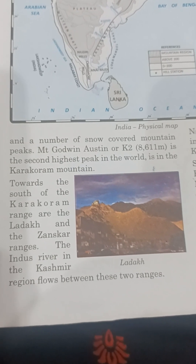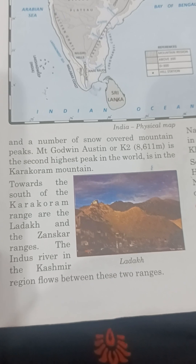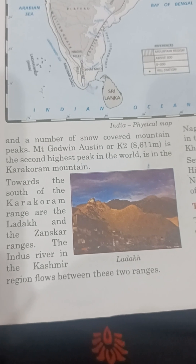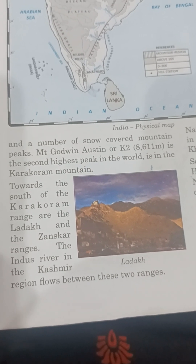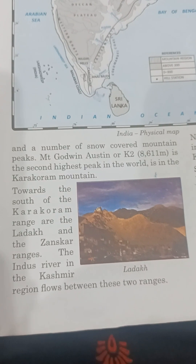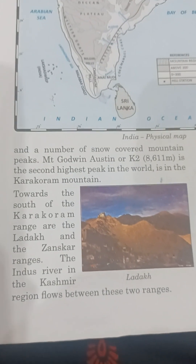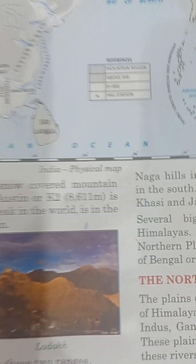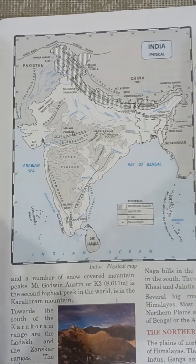To the south of the Karakoram range are the Ladak and the Janskar ranges. The Indus River in the Kashmir region — also known as the Sindhu Nadi — flows between these two ranges.